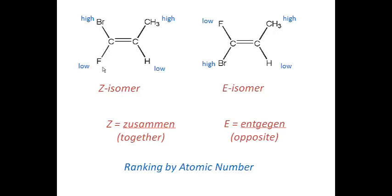We're comparing bromine and fluorine, and bromine has the higher ranking because it has an atomic number of 35 compared to nine for fluorine. On the other side, we're comparing hydrogen with an atomic number of one to carbon with atomic number six, so carbon outranks hydrogen. When the two high-ranking substituents are on the same side of the double bond, we call that isomer Z — it stands for the German word 'Zusammen,' meaning together. The other isomer is designated E, from the German word 'Entgegen,' meaning opposite, referring to the opposite location of the two high-ranking substituents.